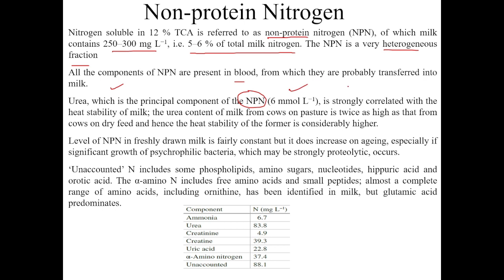The concentration of urea in milk is six millimoles per liter, and it is strongly related to the heat stability of milk. Higher urea content means higher heat stability. For example, urea content of milk from cows on pasture is twice as high as that from cows on dry feed, and hence the heat stability of the former is considered to be higher.